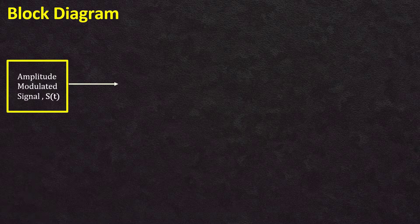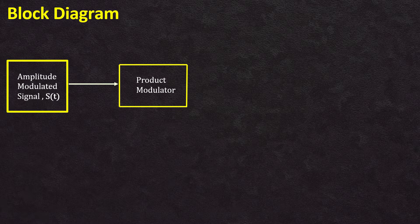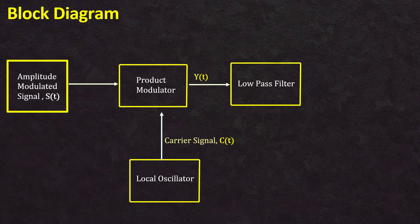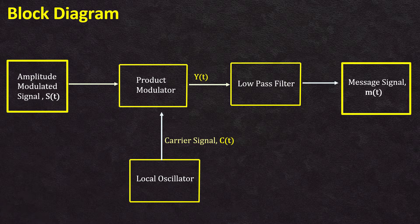Let's see the block diagram for the synchronous detector. The amplitude modulated signal s(t) coming from the transmitter is given as an input to the product modulator. A carrier signal denoted by c(t) is produced at the local oscillator and serves as another input to the product modulator. A very important point is that the carrier signal generated by the local oscillator should be synchronized with the carrier signal used in the incoming amplitude modulated signal. The output y(t) generated by the product modulator is then passed through a low pass filter, whose output is our desired demodulated message signal.